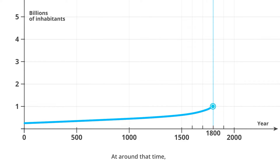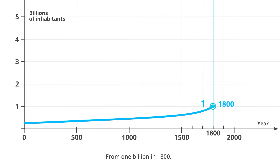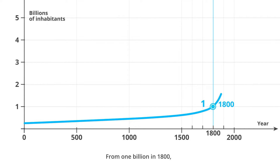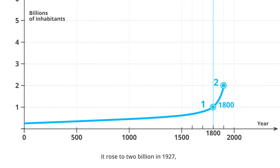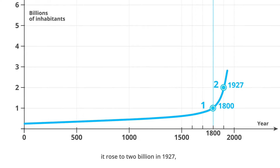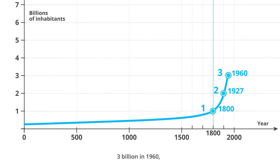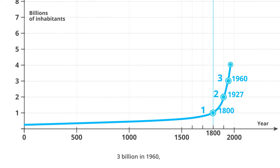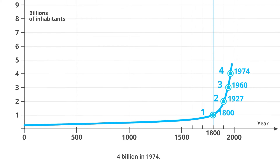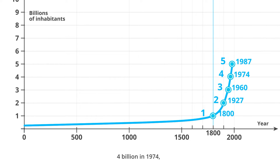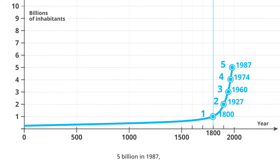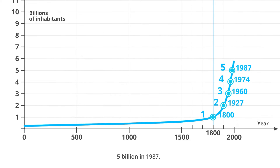At around that time, the population started growing much faster. From 1 billion in 1800, it rose to 2 billion in 1927, 3 billion in 1960, 4 billion in 1974, and 5 billion in 1987.